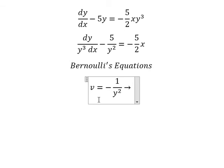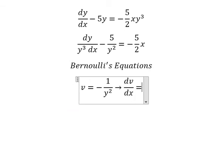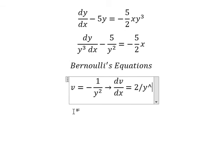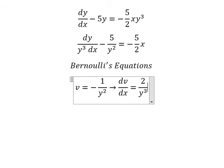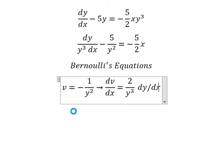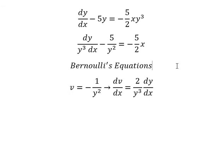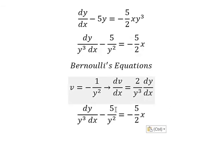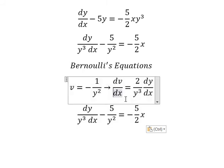If we differentiate both sides, we have 2 over y to the power of 3 times dy over dx. Because we don't have the number 2 here, we divide both sides by number 2.